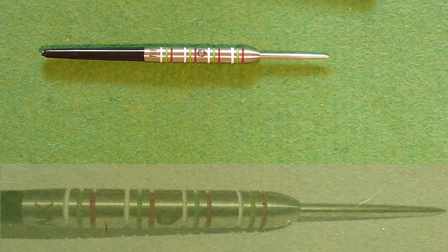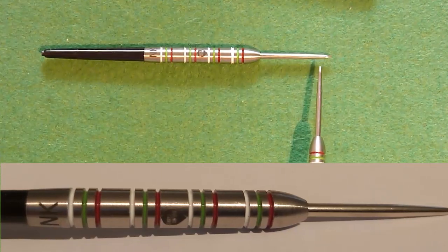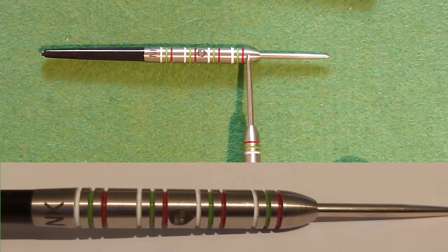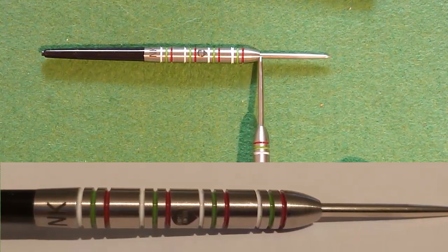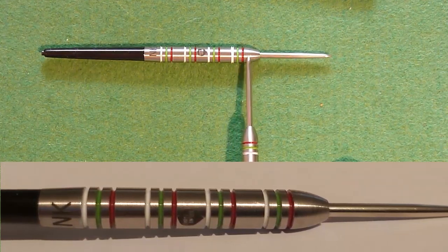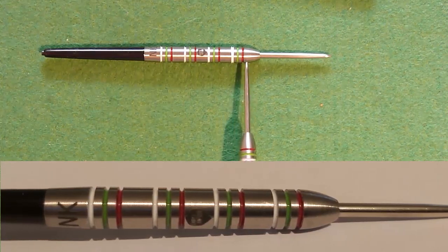Looking at the construction of the dart we've got a very traditional shape. We start off with a standard steel tip point and then a nice gentle bullnose leading up over the first six or seven millimetres, seven or eight millimetres. Then we've got these one, two, three, four sets of three grooves.